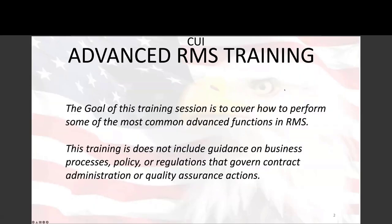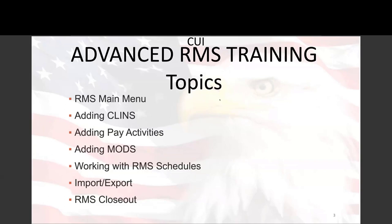We've got a couple hours scheduled, so we'll try to get through this in about an hour and a half. If I go too fast, you can ask me to slow down or save questions for the end of the section. The goal of this training is an overview of RMS from a more advanced perspective. Yesterday's beginner training covered daily reports and basic contract functions. Today we'll talk about contract setup, menus, local and district office, line items, finances, modifications, schedules, import-export, and closeout.